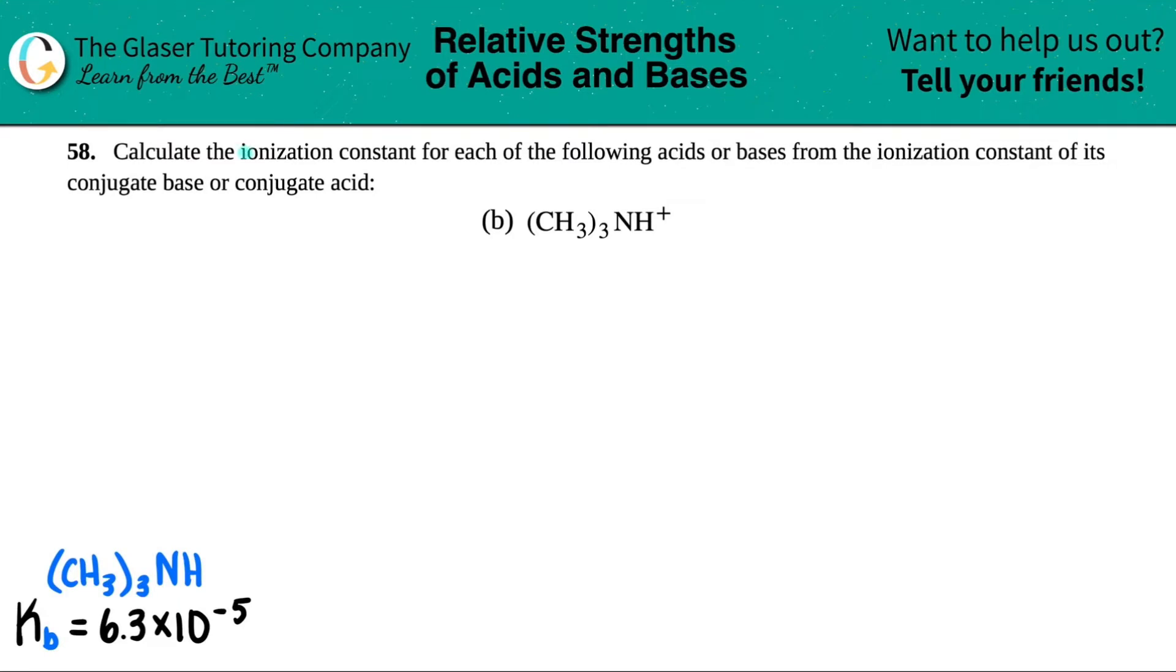Number 58. Calculate the ionization constant for each of the following acids or bases from the ionization constant of its conjugate base or conjugate acid, and we have letter B out of the bunch.